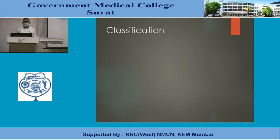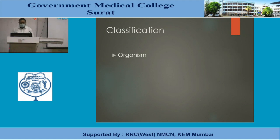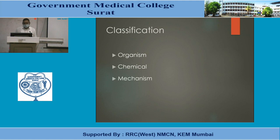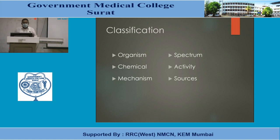We have now covered definitions of chemotherapy, antibiotics, and antimicrobial agents, and the history in three phases. Now we come to classification. Antimicrobial agents can be classified based on: the organisms on which they act, their chemical structure, mechanism of action, spectrum of activity, whether they are cidal or static, and the sources from which they are obtained.